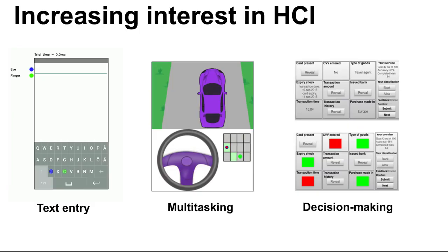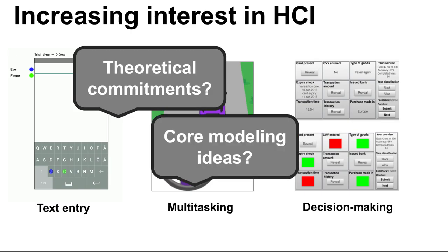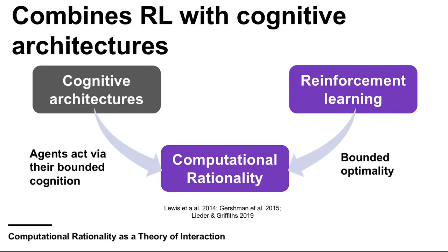In the wake of increasing interest in the field of HCI, we have to ask: what is computational rationality for HCI? What are its core theoretical commitments? What are the core modeling ideas? And what is the scope of tasks that we can model with it? Computational rationality originates from the theory of reinforcement learning, but in its applications in HCI it takes ideas from classical cognitive architecture models like EPIC and GOMS.